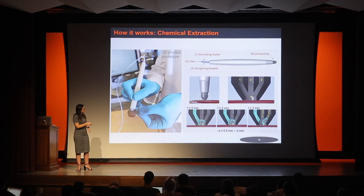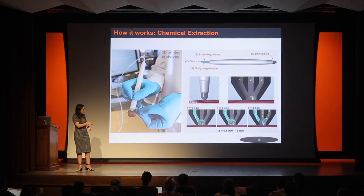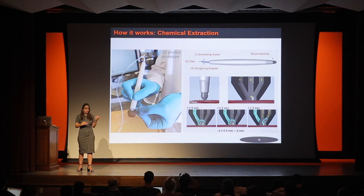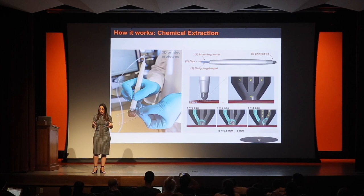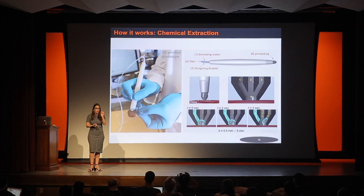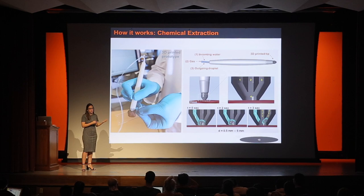Because we use 3D printing, the opening of the tip defines our resolution — the area being sampled. We optimize this opening from as small as 500 micrometers to about 5 millimeters, depending on the surgical need. For breast cancer, you'd want to probe a larger area around the lumpectomy site. For brain cancer, the margin is much narrower. So it's really adaptable depending on the surgical need and the surgeon's preference.